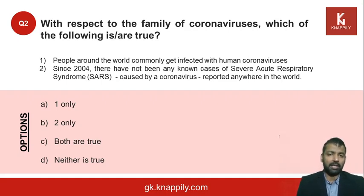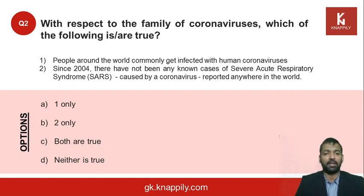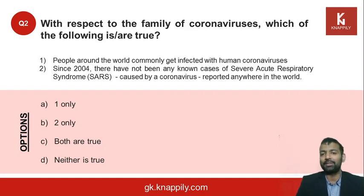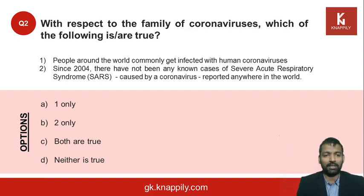Question two: which of these is or are true with respect to the family of coronaviruses? Statement one — people around the world commonly get infected with human coronaviruses. Statement two — since 2004 there have not been any known cases of SARS, severe acute respiratory syndrome, which is caused by a coronavirus, reported anywhere in the world. Is it one only, two only, both, or neither?